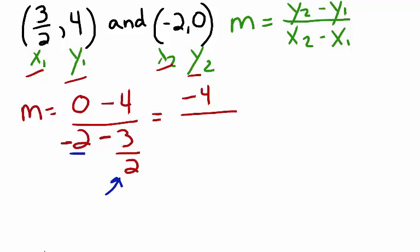The negative 2 we can think of as negative 2 over 1. So our goal is to give the negative 2 a denominator of 2. In order to do that, I can multiply the numerator and denominator by 2 over 2. So now we have 0 minus 4, which gives negative 4. 2 times negative 2 gives negative 4. 2 times 1 gives 2, minus 3 halves.